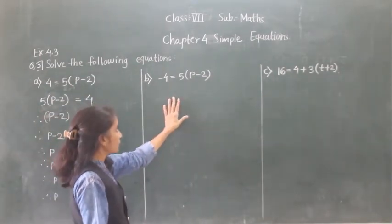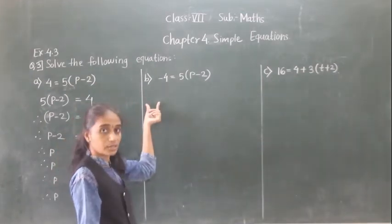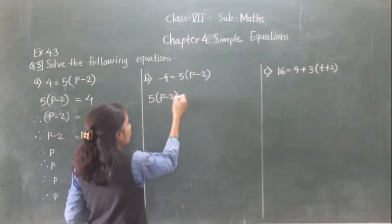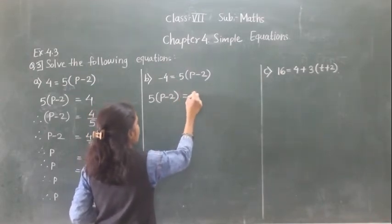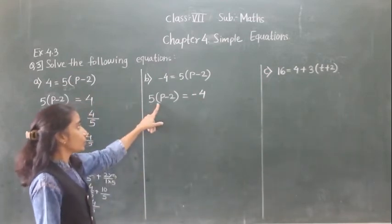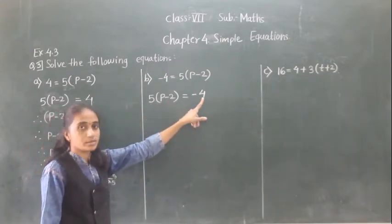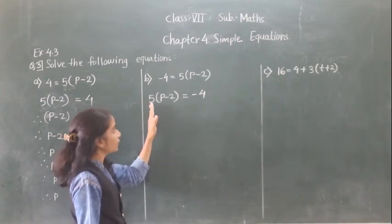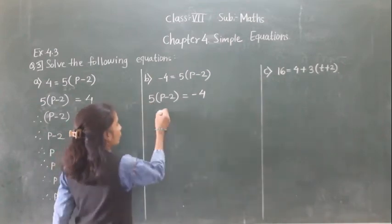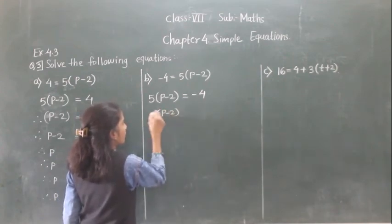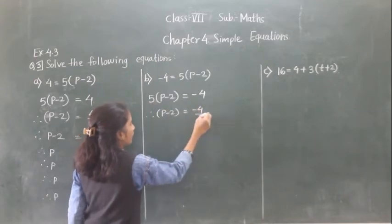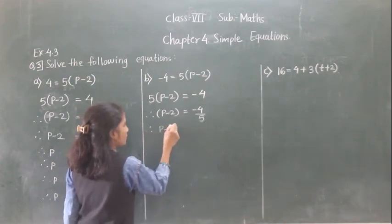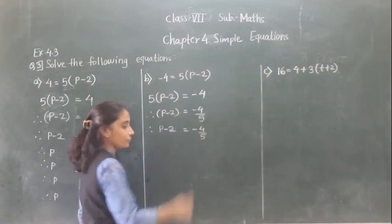Let's summarize this example using this method. 5 into bracket P minus 2 is equal to minus 4. Now 5 comes to the right hand side and becomes division. So P minus 2 is equal to minus 4 divided by 5. Now minus 2 we transfer to the right hand side — it becomes plus 2.